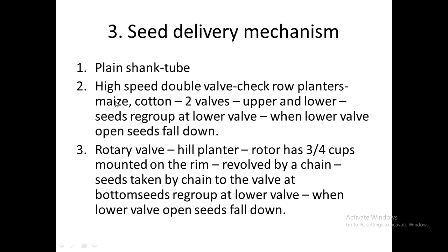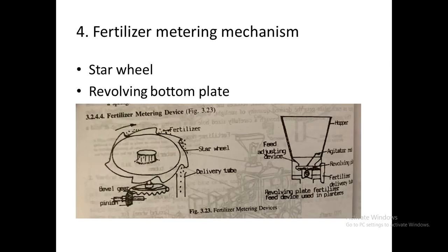The rotary valve type delivery mechanism has a single valve at the bottom and a rotating component on top with three or four cups mounted on the rim. Seeds are picked up by the rotor using these cups, driven continuously by a chain. Seeds flow through the chain to the lower valve where they are regrouped, and when the lower valve opens the seeds fall down into the furrow.